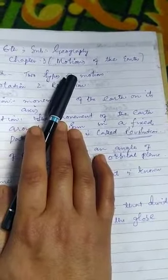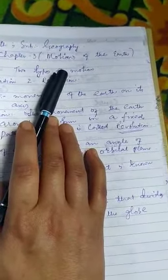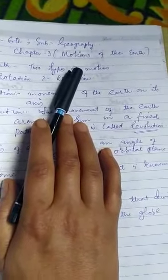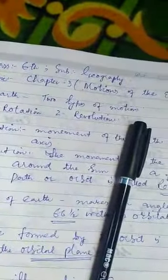If you will see your geography text then you will get chapter number 3 and its name is motions of the earth.